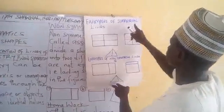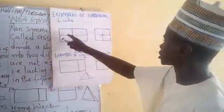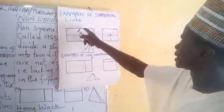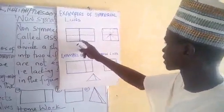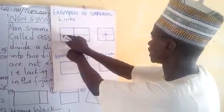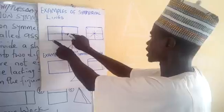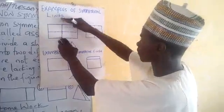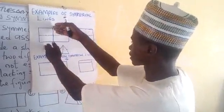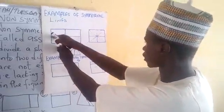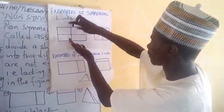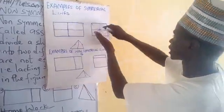Now, examples of symmetrical lines. The first shape here is a rectangle, divided into four different parts. The first line is a horizontal line that passes through the center and divides the rectangle into two equal halves — one up, one down. The other line is a vertical line, which also divides the rectangle into two equal parts. Categorically, the rectangle has been divided into four equal parts.